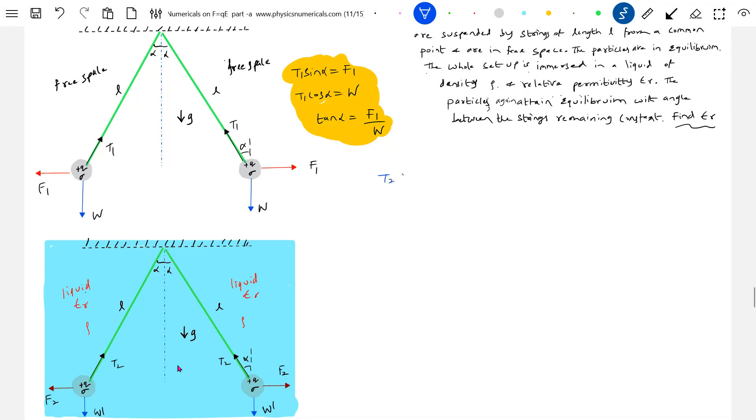At equilibrium here, so T2 sine alpha should be equal to F2. T2 cosine alpha should be equal to W dash. Dividing these two, tan alpha should be equal to F2 by W dash.